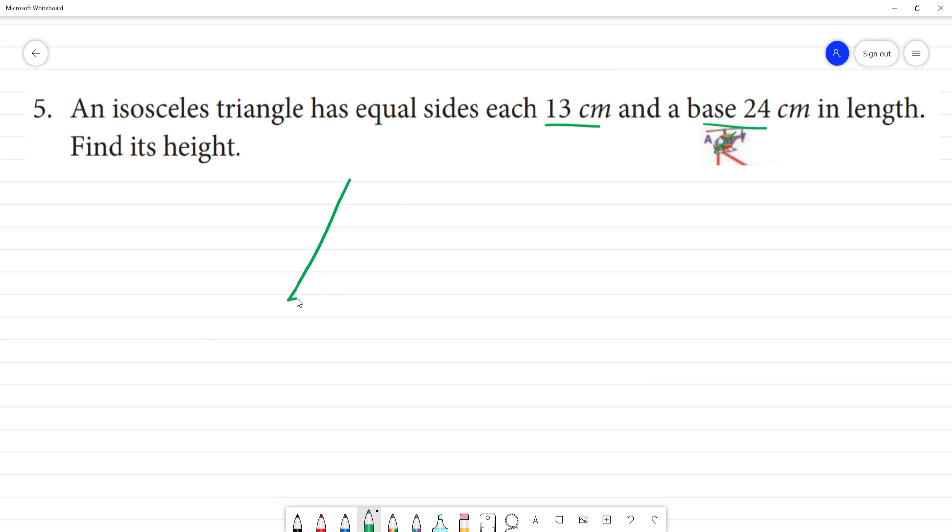So, an isosceles triangle has two equal sides. This side and this side are equal. Both sides are 13 cm. We can mark it as A, B, C.